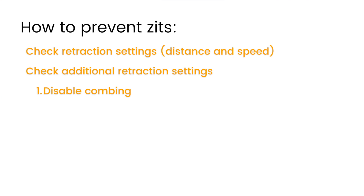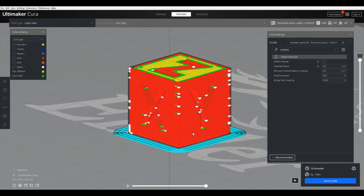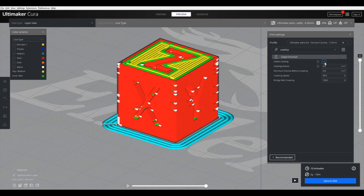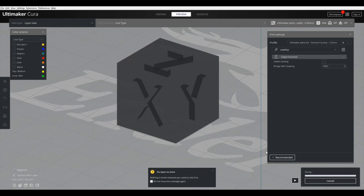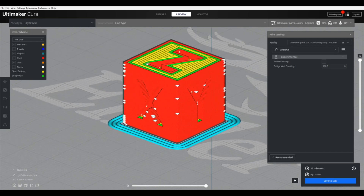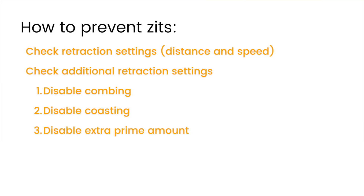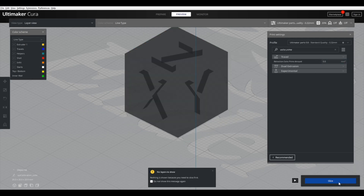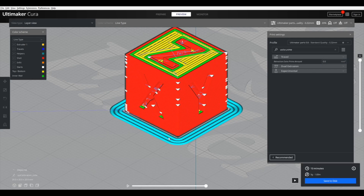Another setting to check is coasting. What that does is replace the last little bit of extrusion with a travel move, assuming that your nozzle maybe oozes a little bit — it'll turn that ooze into useful material. That can sometimes leave gaps if the coasting value is too high, so I would recommend just turning it off. There's also a setting called extra prime amount, which adds a little bit of extra material when you un-retract to make up for anything lost due to stringing. But this can cause blobs on the surface of your print, so I would recommend leaving this at zero as well.